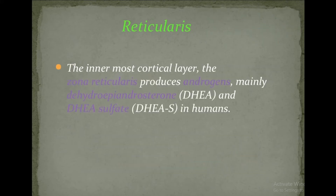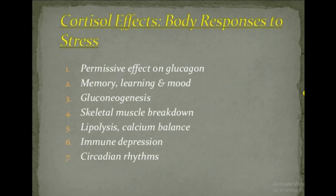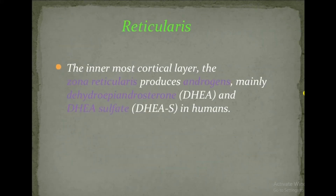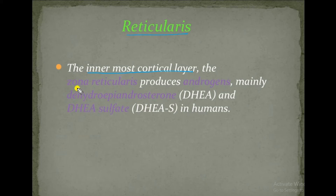The zona reticularis is the innermost cortical layer, and it produces androgens — mainly dehydroepiandrosterone — and these are significant in humans.